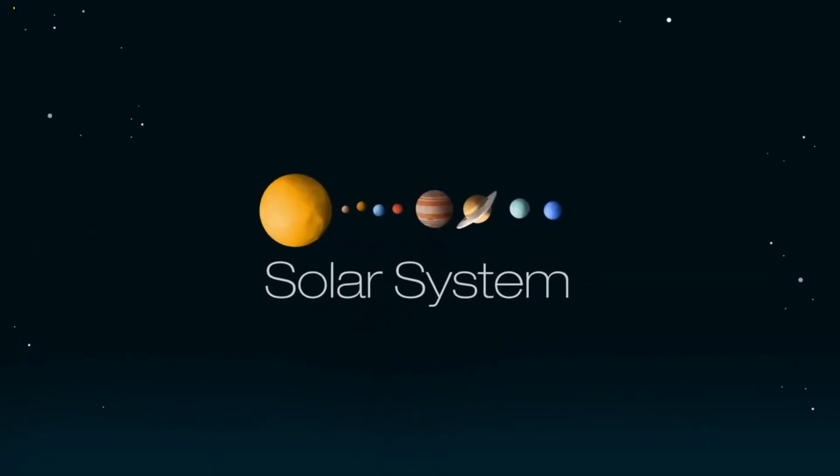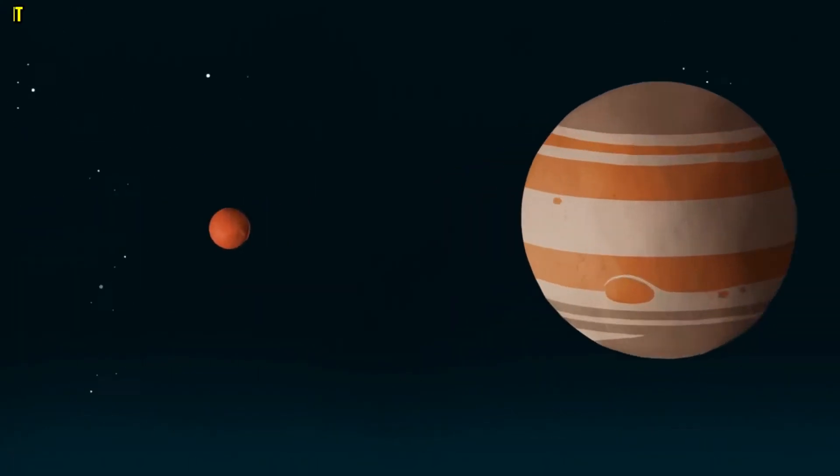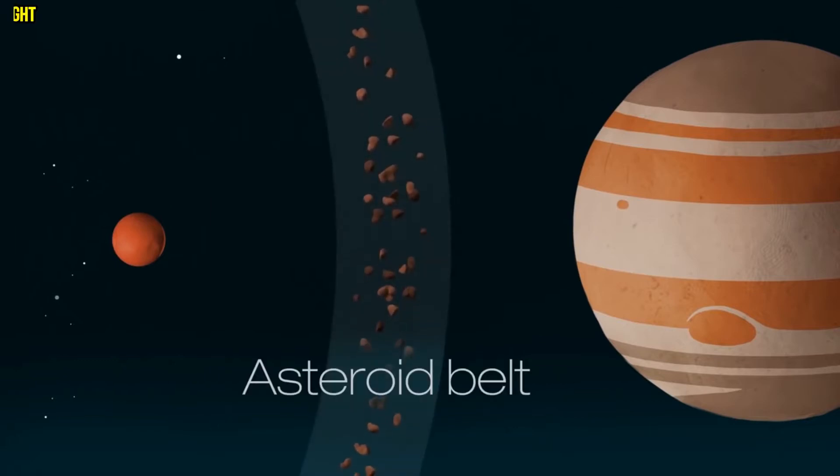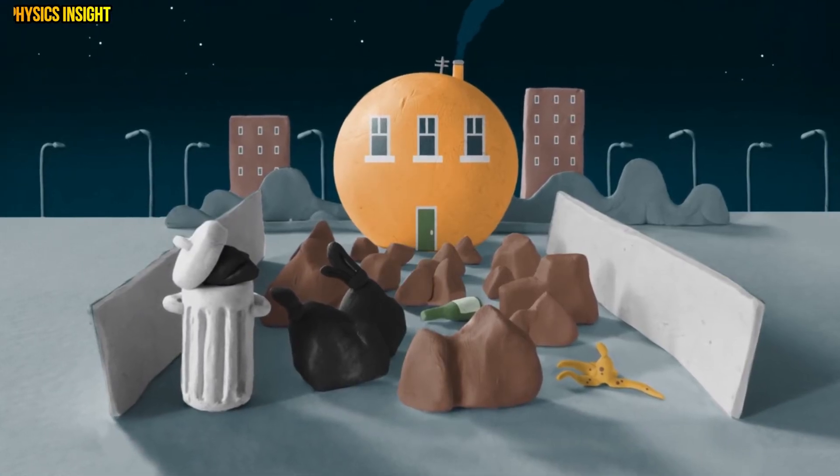Our solar system is a vast and fascinating place. Between Mars and Jupiter we find the asteroid belt. Due to the mighty gravitational effects of Jupiter these chunks of rock and metal couldn't come together to form a planet and instead made up a solar junkyard of sorts.